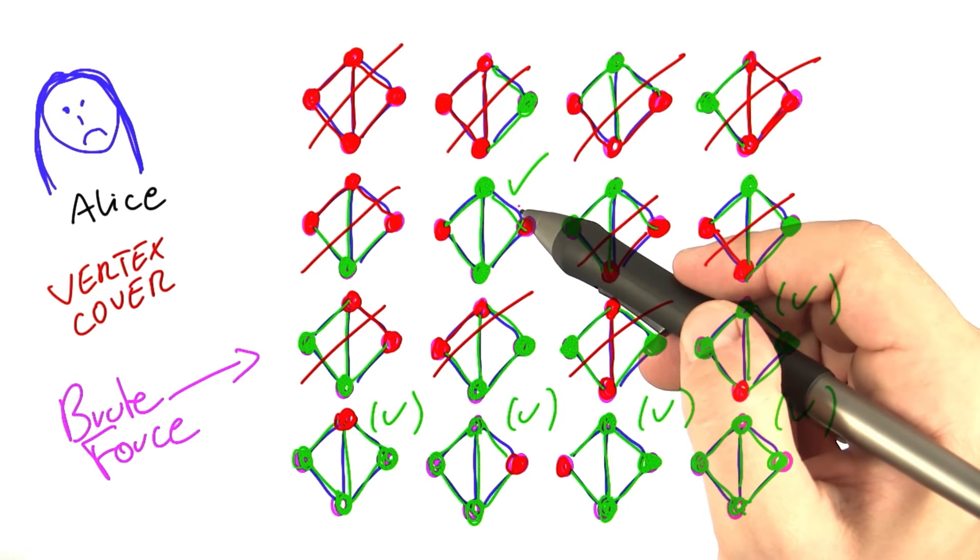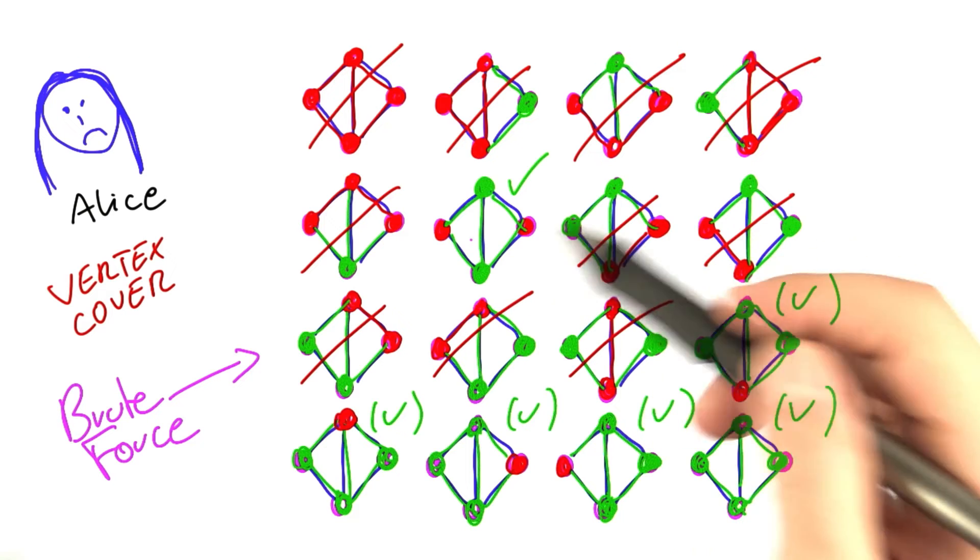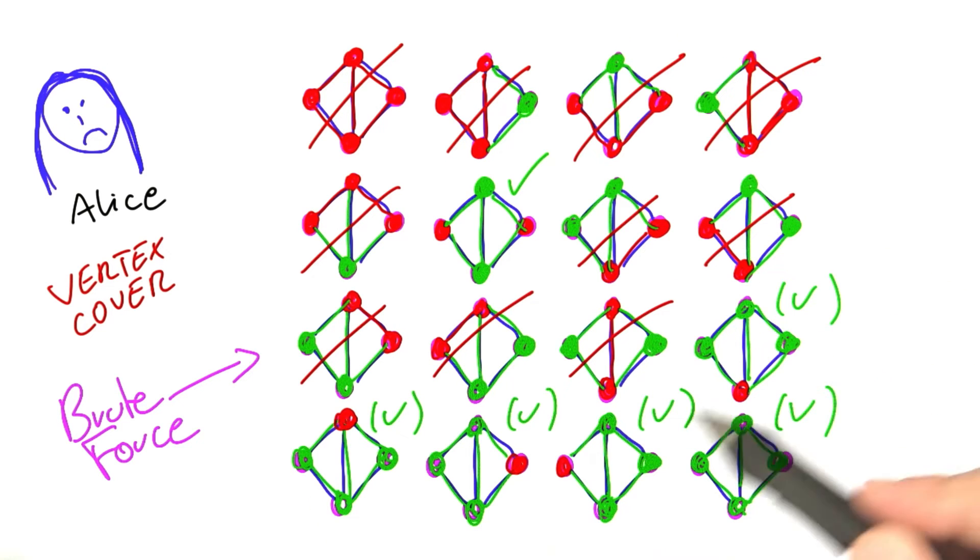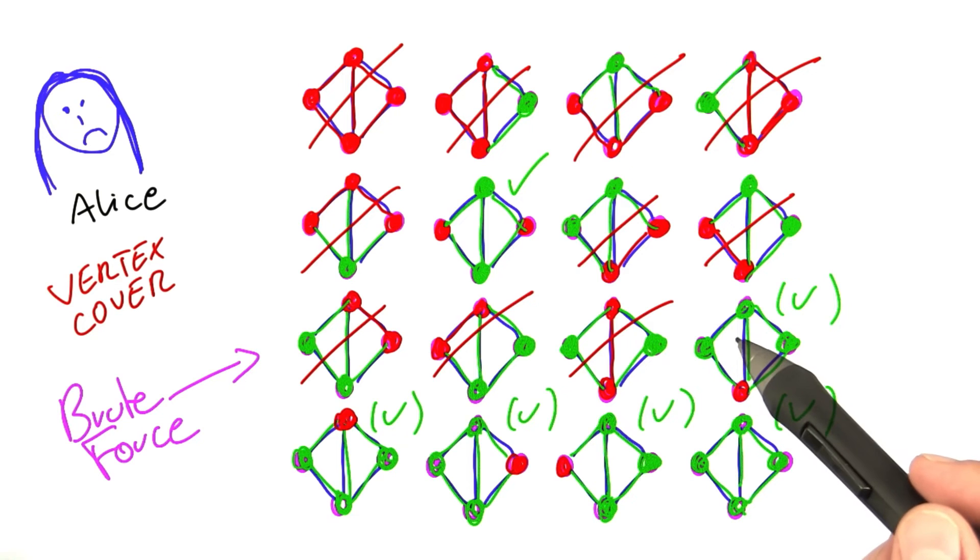And the other thing that her algorithm did that wasn't very smart was, once it had found a solution with two vertices, it still tried all the solutions with three vertices and four vertices. It could have stopped right here because it knew that it would not be able to find any VertexCover that is smaller.